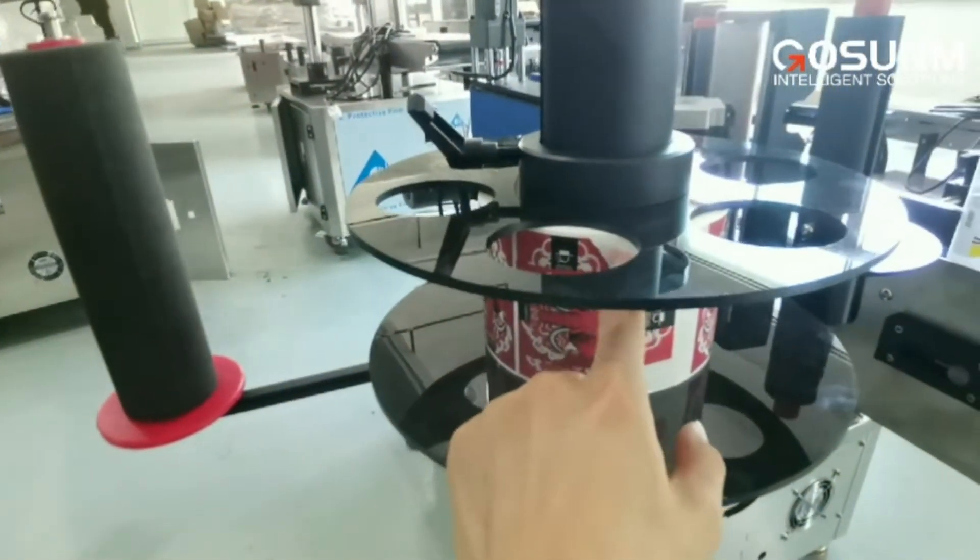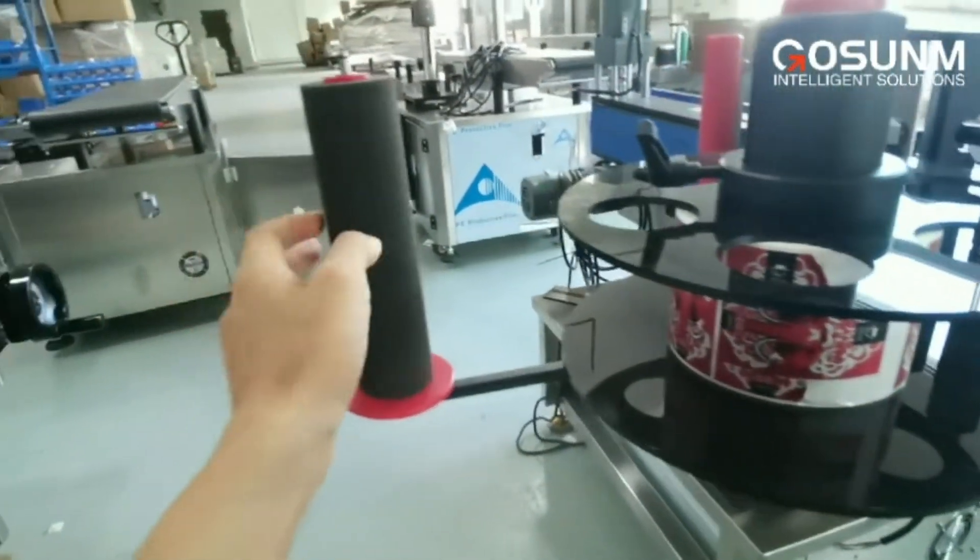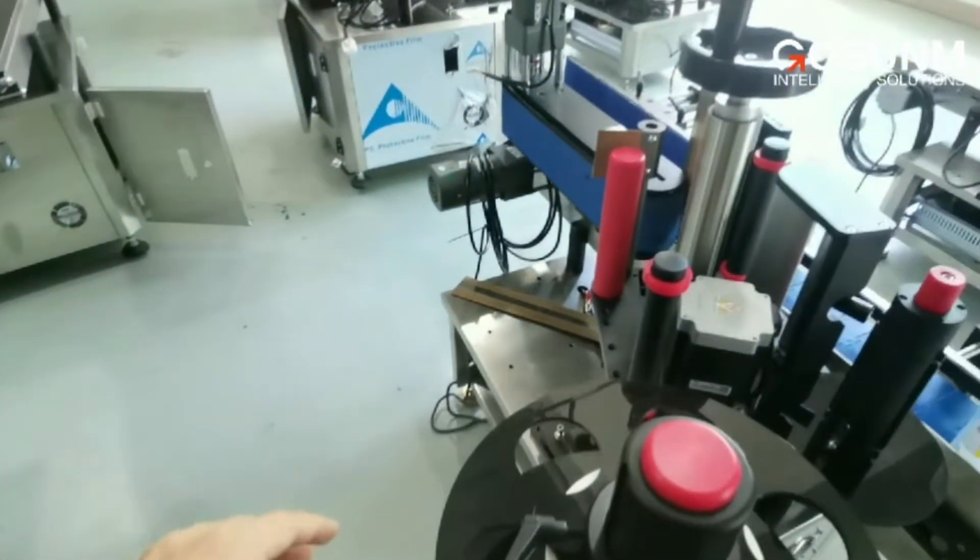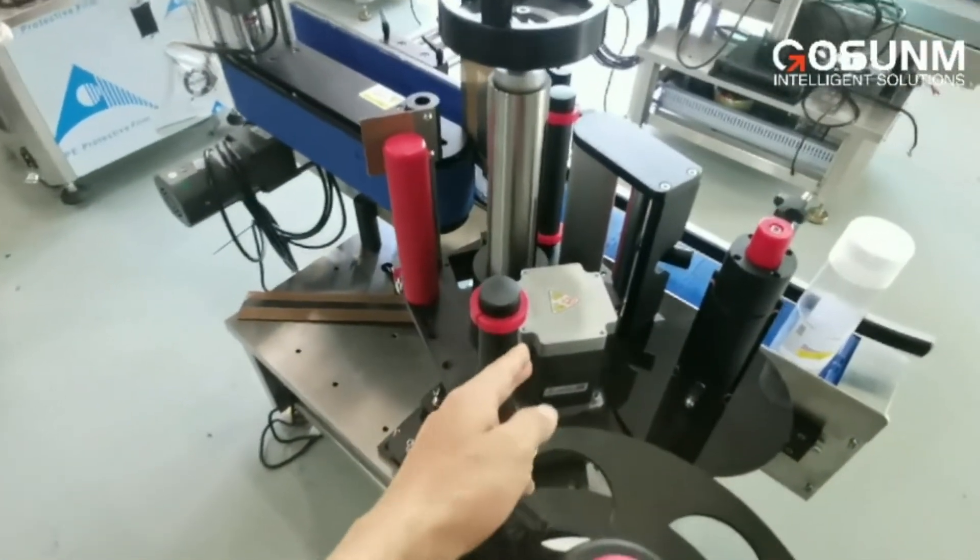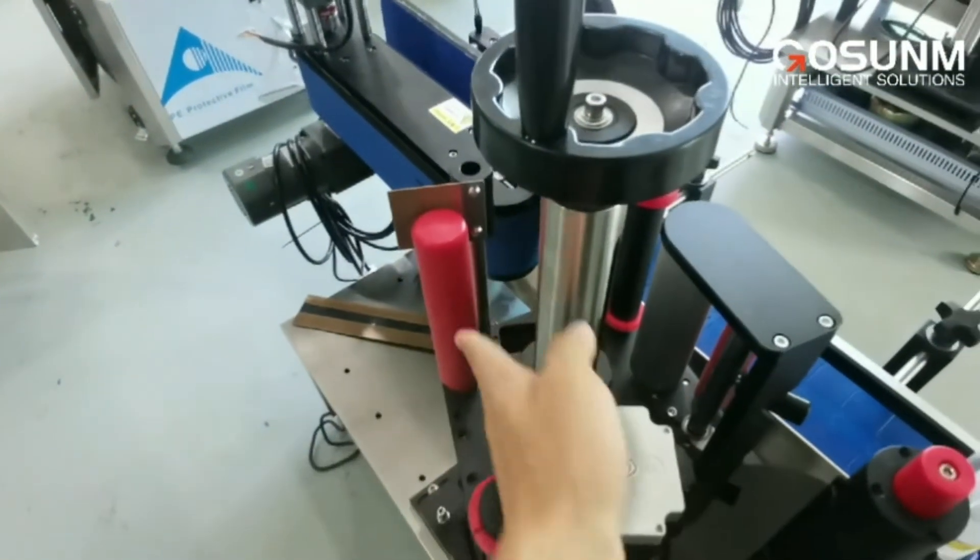And then the label will pass this runner, this traction runner, and then it will go in here.